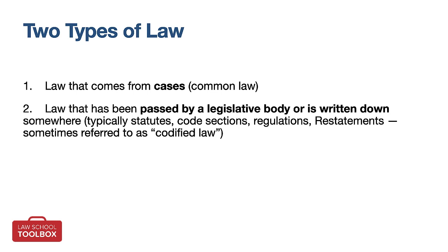Generally speaking, precedent is only binding within a system. You don't want to be citing federal court decisions from the Northern District of California when you're in a state court in San Francisco — those federal cases are irrelevant. So why do we study law from around the country? In law school, cases from state courts all over the country are there to illustrate generally accepted legal concepts. But you want to be more careful in your legal research and writing class, which will typically feature a problem set in a specific jurisdiction. Anytime you think something is settled law, you have to immediately ask yourself: where? It's impossible to answer the question in the abstract.